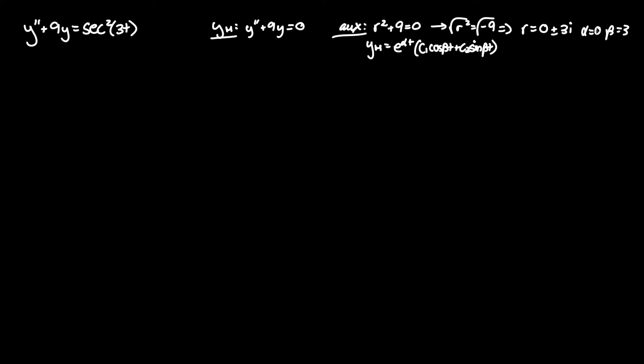And plugging in that alpha is 0, e to the 0 is 1 and you can just get rid of that. So y homogeneous now equals c1 cosine of 3t plus c2 sine of 3t.